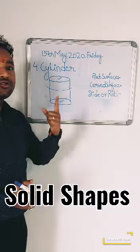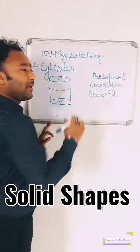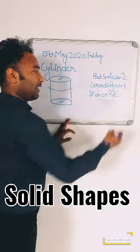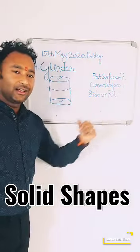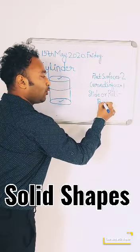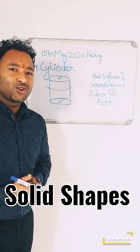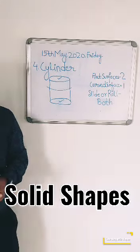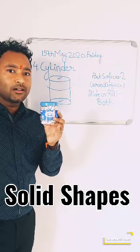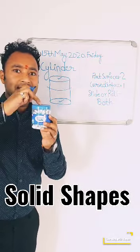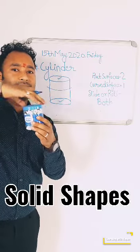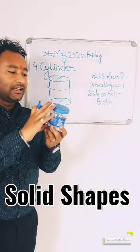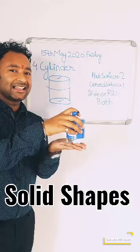The cylinder has two flat surfaces and one curved surface, so this cylinder will both slide and roll — it will do both. For example, look at this cylinder-shaped container: the top is flat, the bottom is flat, and there is one curved surface on the side. So it will roll and it will slide.